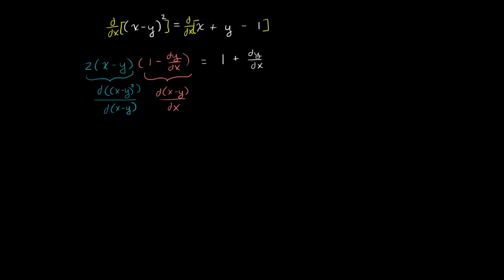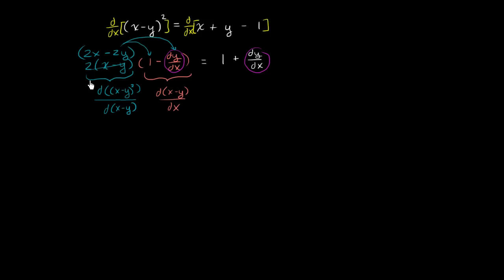Now let's solve for dy/dx. I can rewrite 2 times (x minus y) as 2x minus 2y by distributing the 2. Then I distribute (2x minus 2y) onto each term: 2x minus 2y times 1 is just 2x minus 2y.